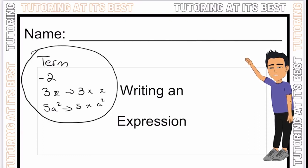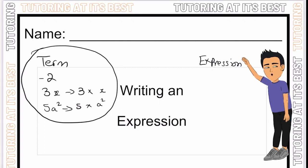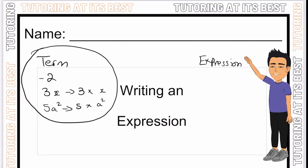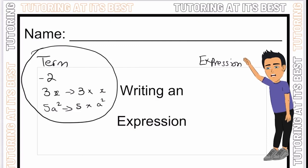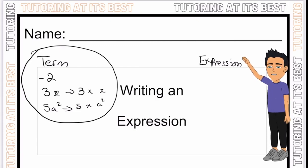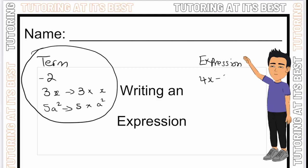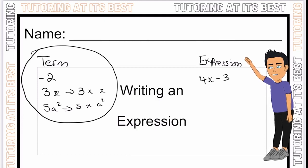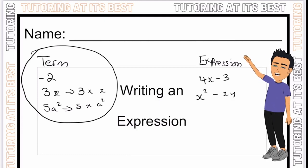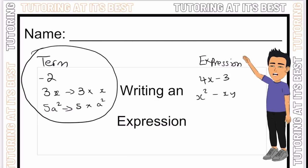Let's now focus on an expression. An expression is a set of terms combined using the operations add, subtract, multiply or divide. For example, we could have 4x minus 3 or x squared minus xy. As you can see, it's a set of terms being put together.